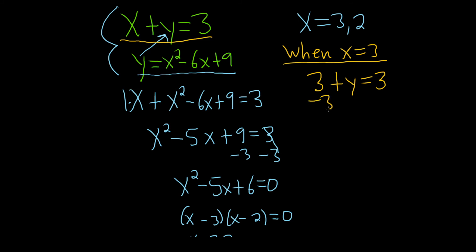Then subtract 3, and that will give us y equals 0. So when x is equal to 3, y is equal to 0. So that gives us our first ordered pair. So 3 comma 0. That is one of the solutions.